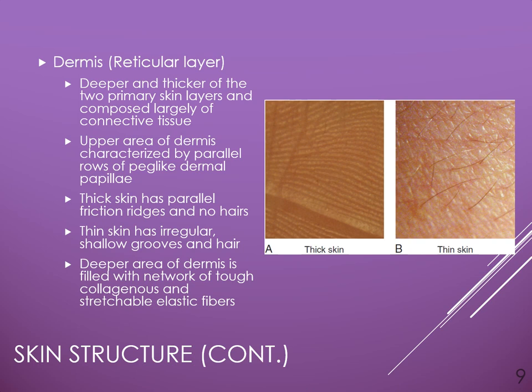The predominant rest of the skin is referred to as thin skin, which typically has hair and irregular shallow grooves. The dermal ridges make up our fingerprints — that unique pattern that everybody has on their hands. Some people, due to a genetic mutation, never develop fingerprints; this is called dermatopathia pigmentosa. The deeper area of the dermis is filled with a network of tough, collagenous, elastic fibers within the reticular layer, making the skin stretchable and elastic.